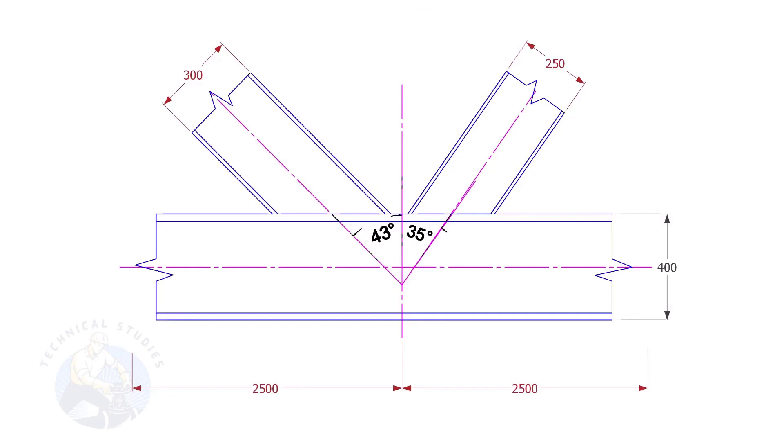To calculate the cutback of a beam or channel, we need to know two things. The size of the beam and the including angle.